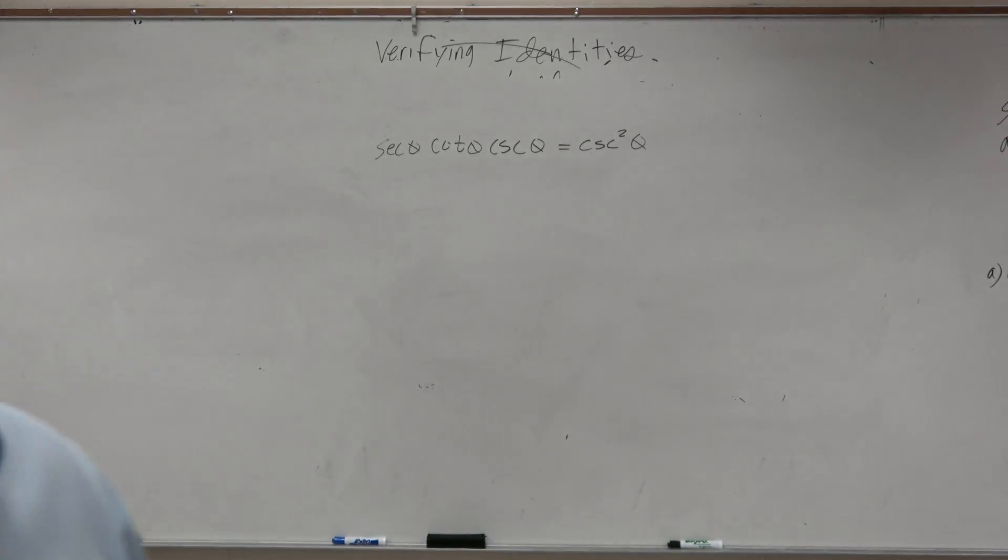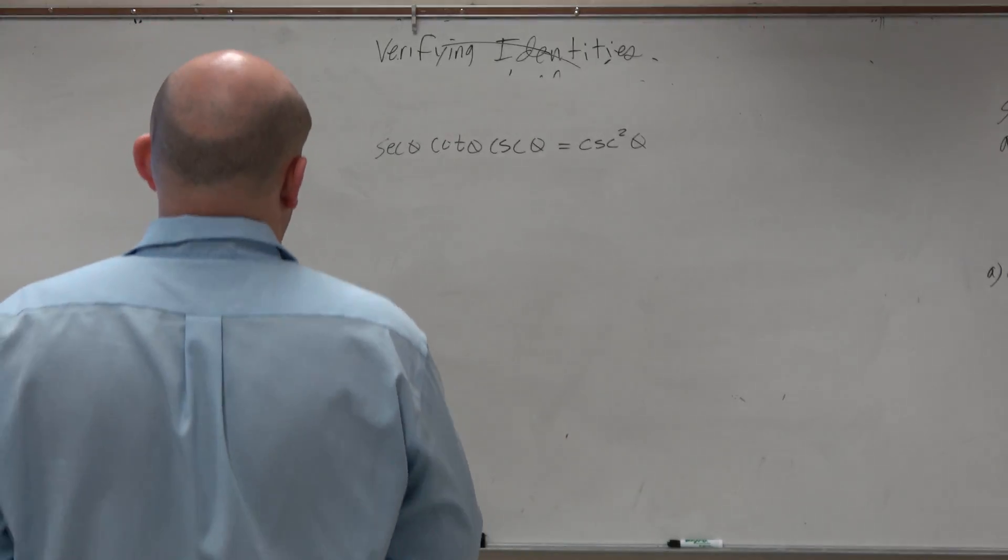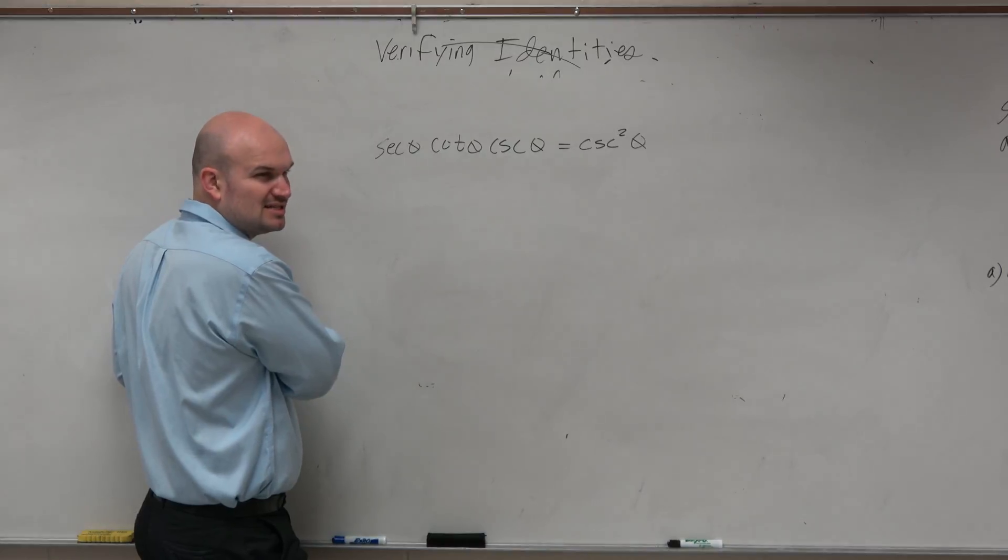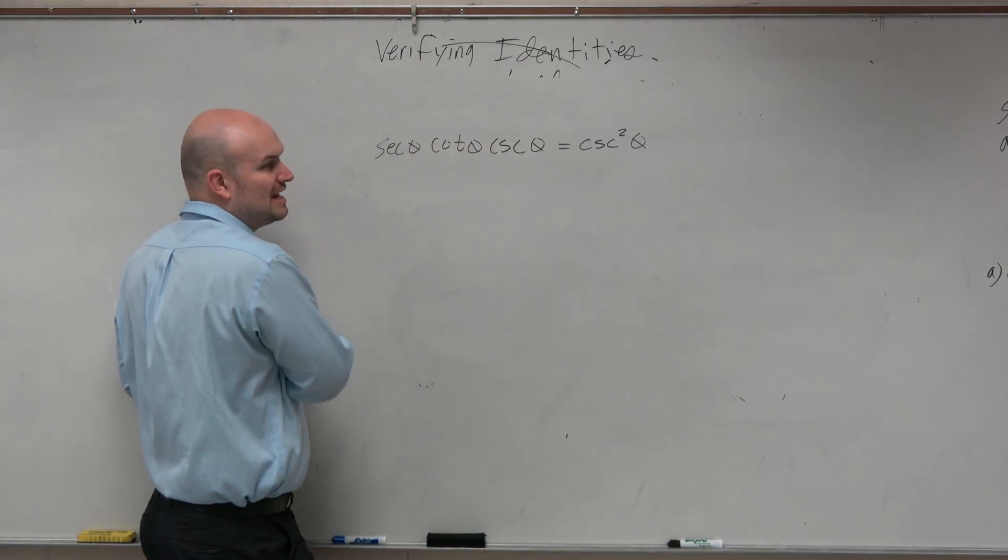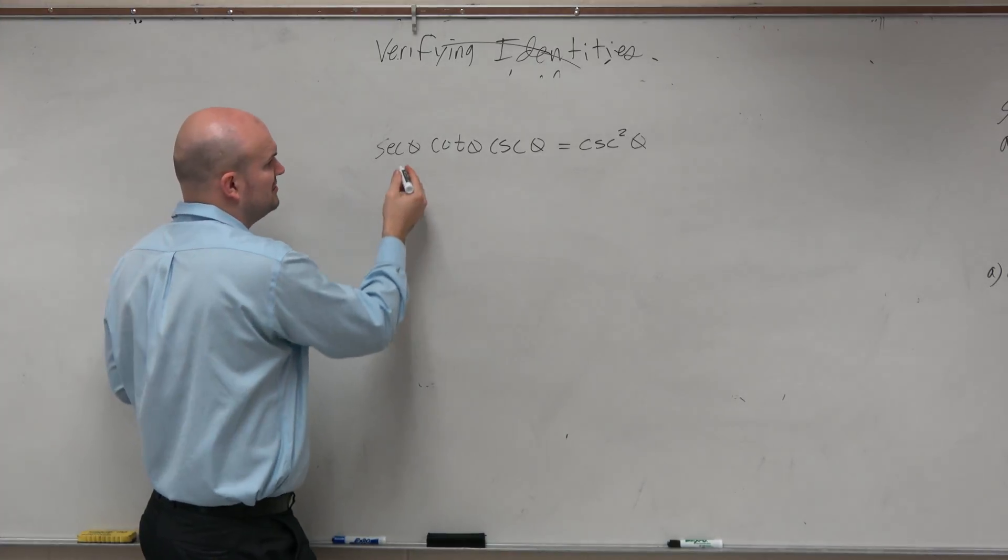So maybe with all these identities, I could rewrite these. I'm not going to use the even odd or the cofunction identities. Pythagorean doesn't look like it's really applied. I could apply Pythagorean over here. But why don't I just use the reciprocal identities? Let's do that.